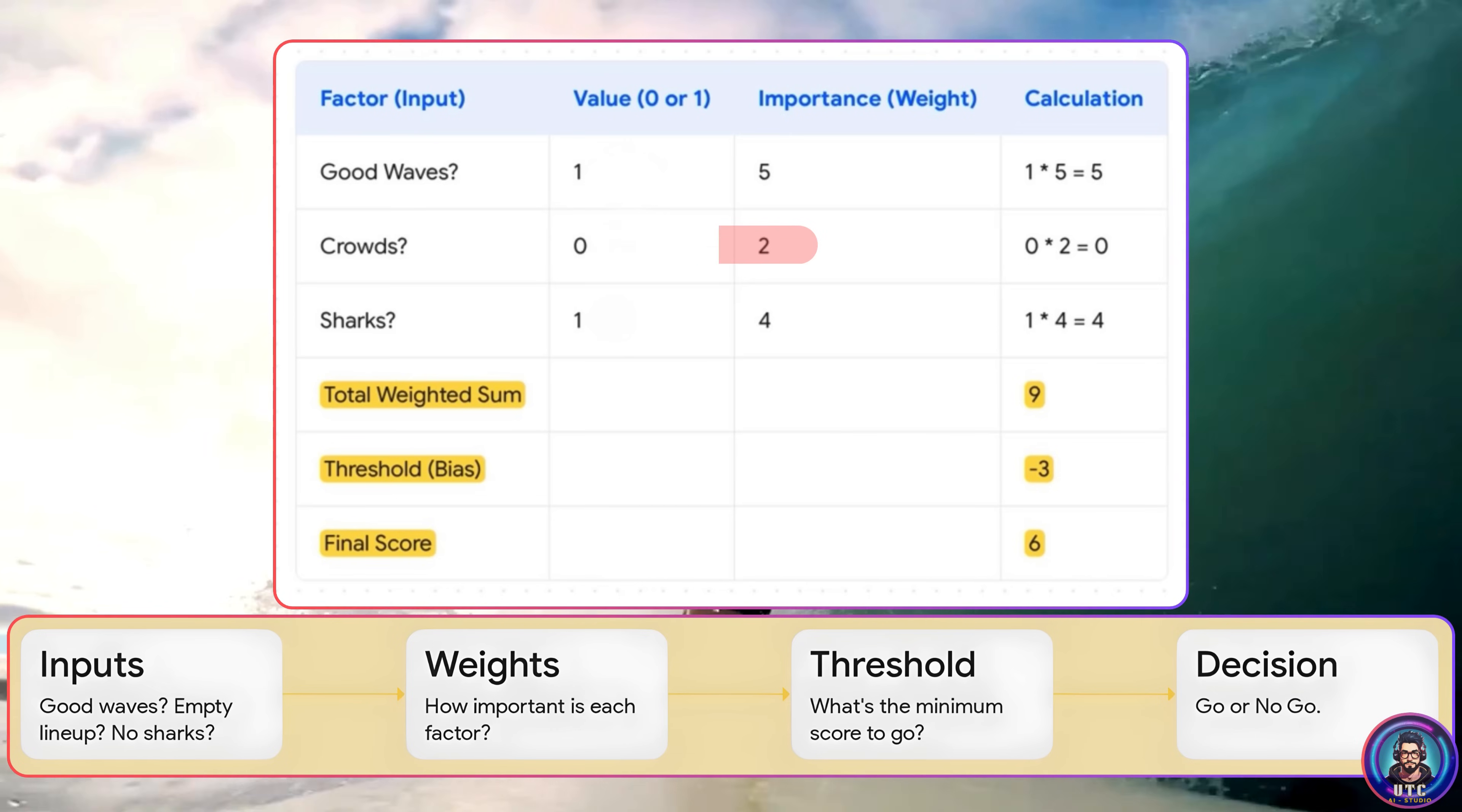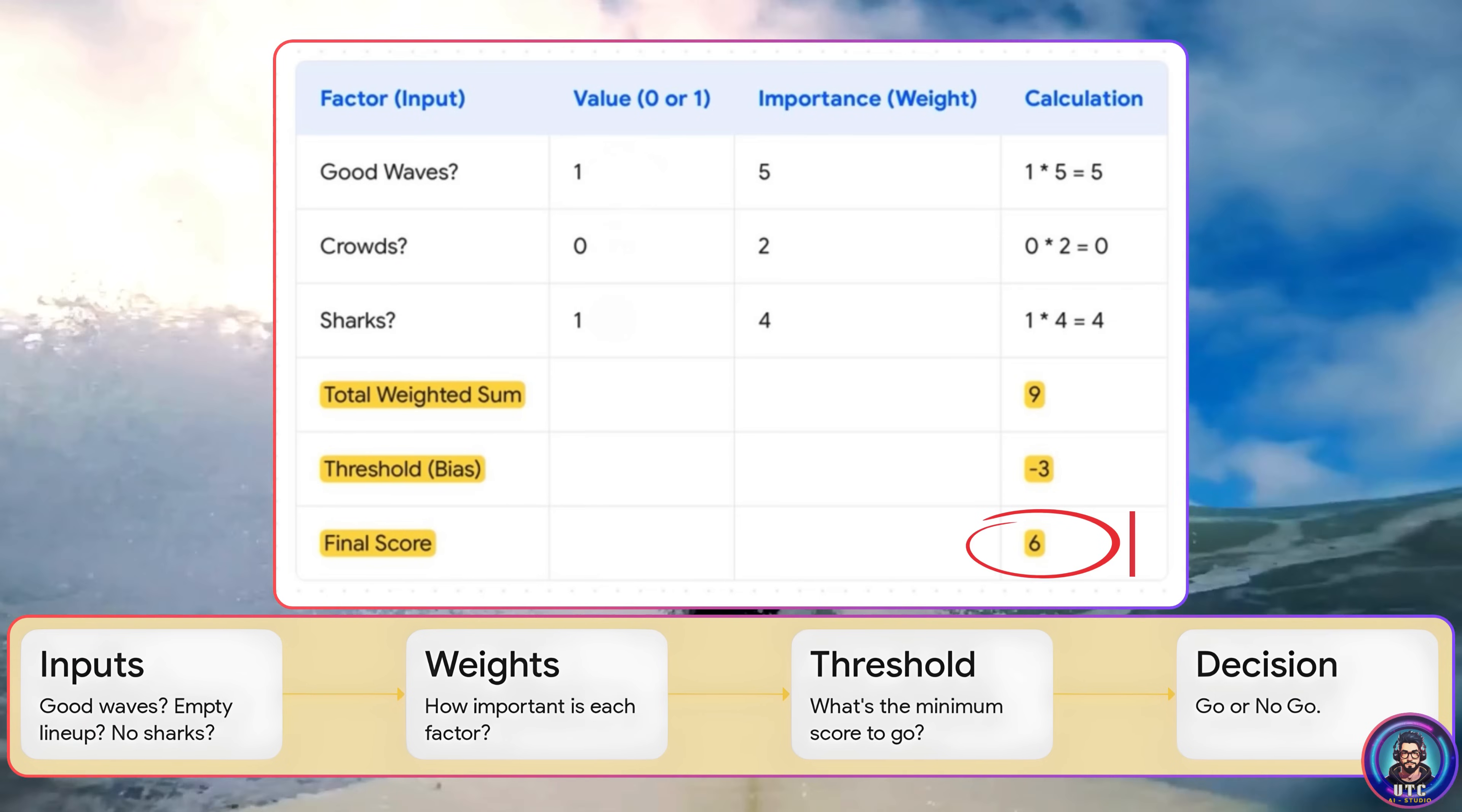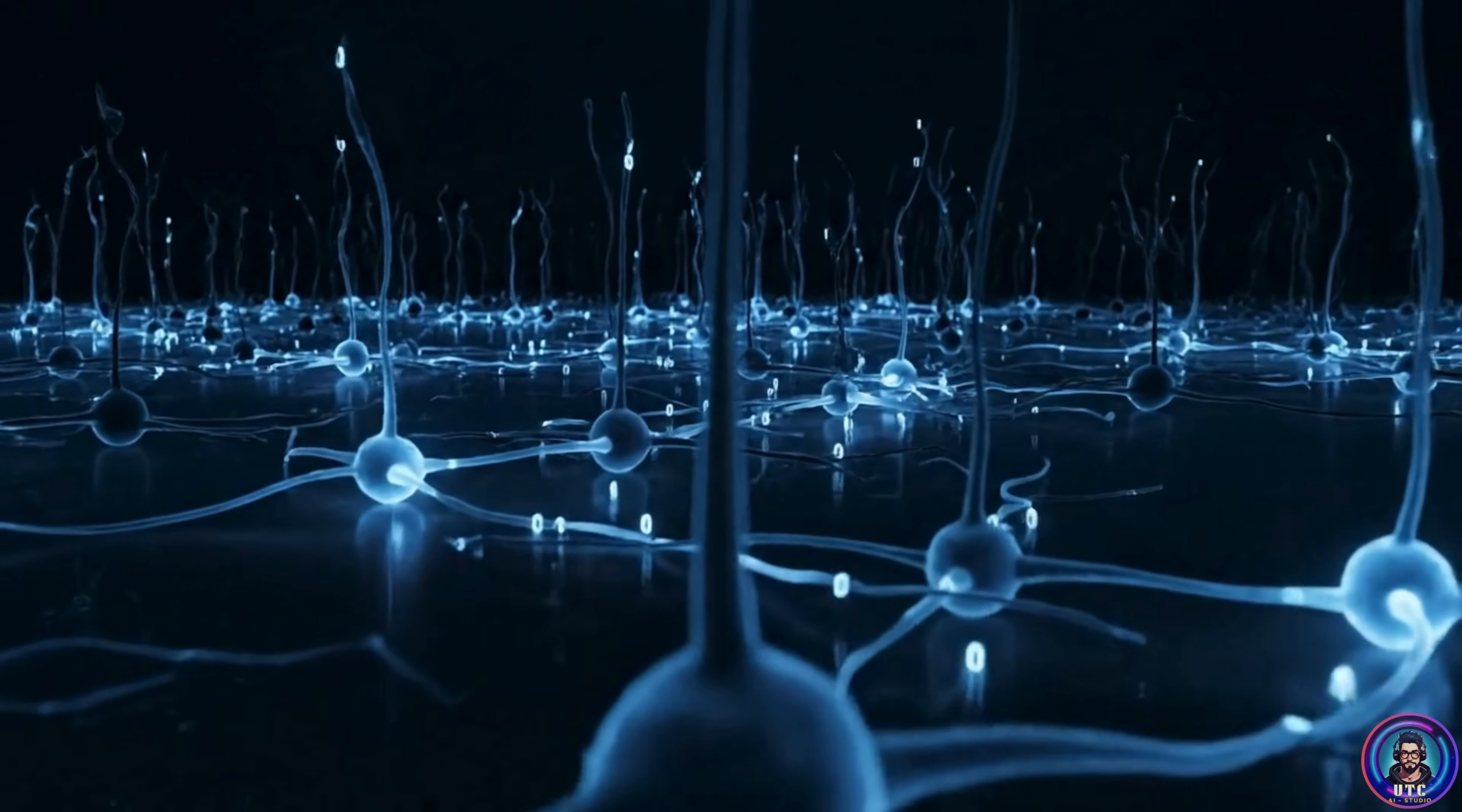We just multiply each factor by its weight and add it all up. Finally, we subtract something called a bias. We'll use 3. You can think of the bias as the neuron's natural laziness. It needs a good reason to get going. So what do we get? The final score is 6. And since 6 is definitely greater than 0, the neuron activates. The dimmer switch cranks all the way up to on. The decision is made, we're going surfing. Every single neuron in the network is just making a simple little decision, exactly like this one based on the weighted information it gets, and its own little bias.